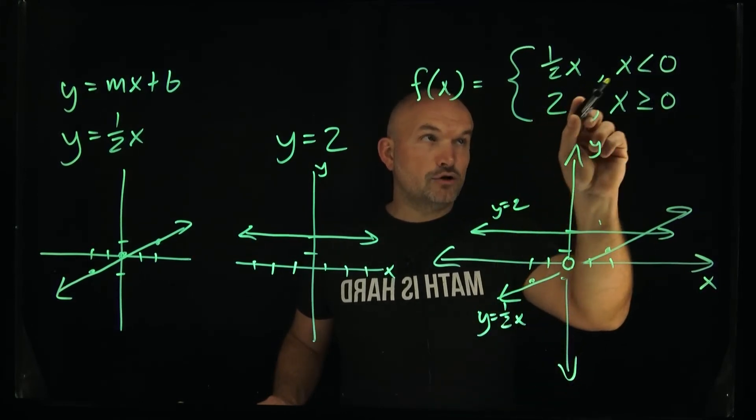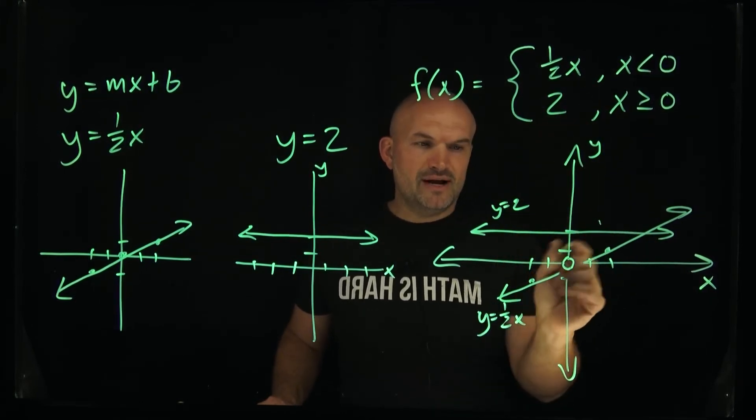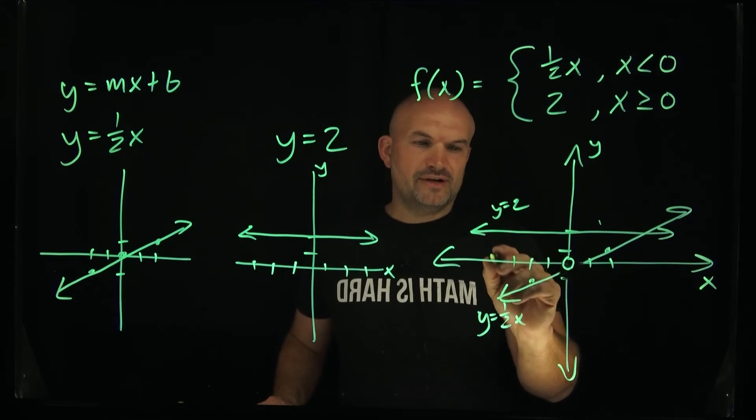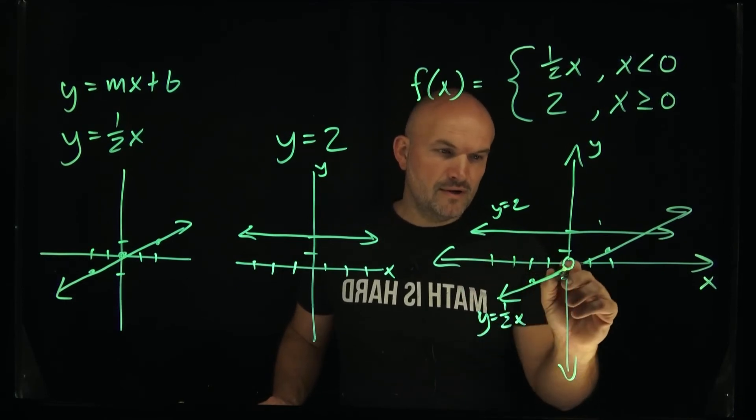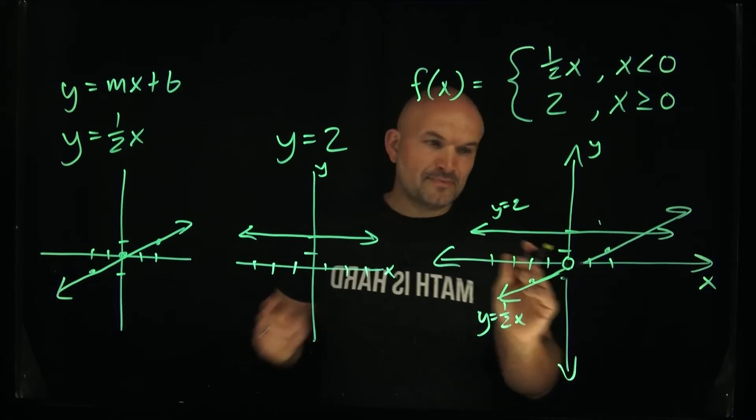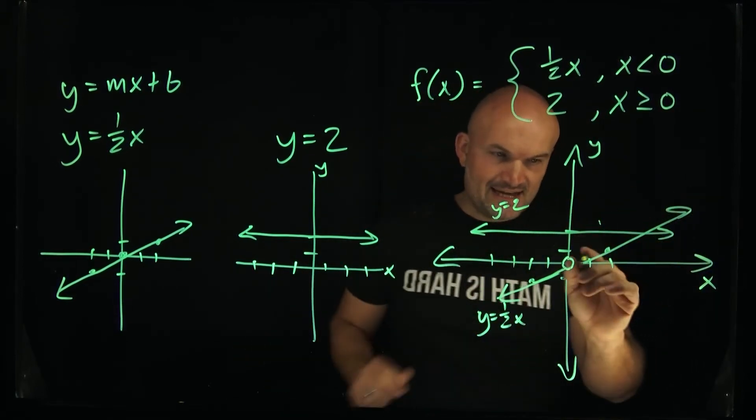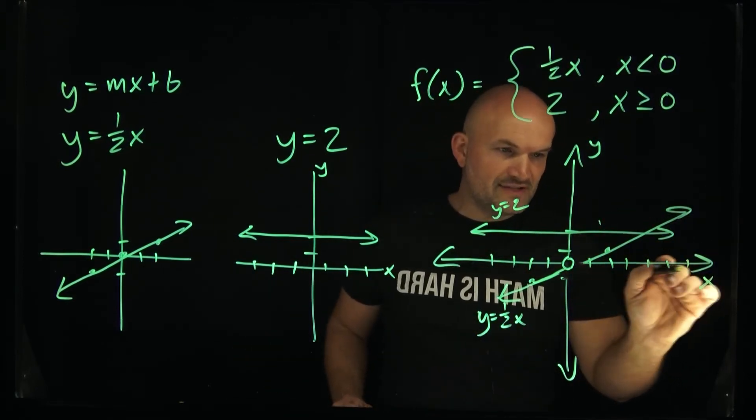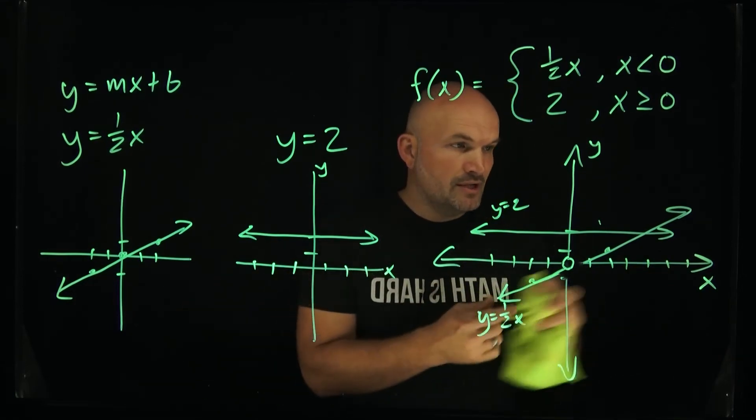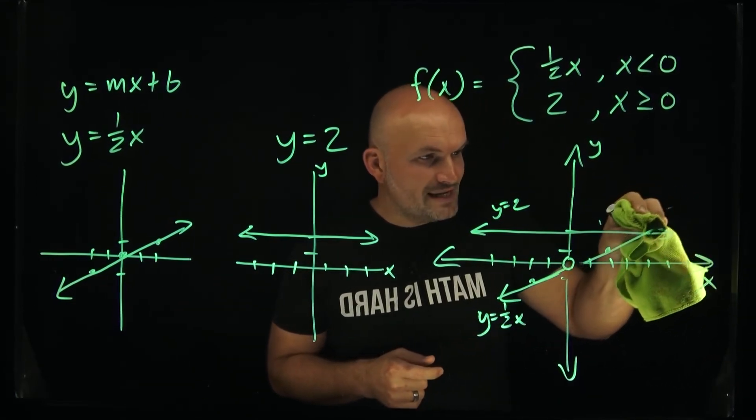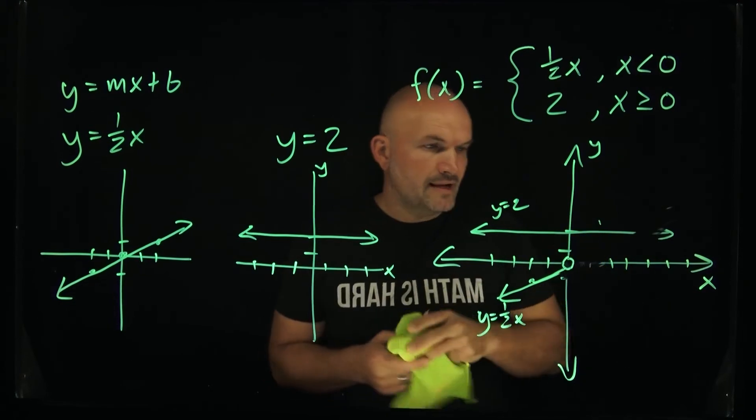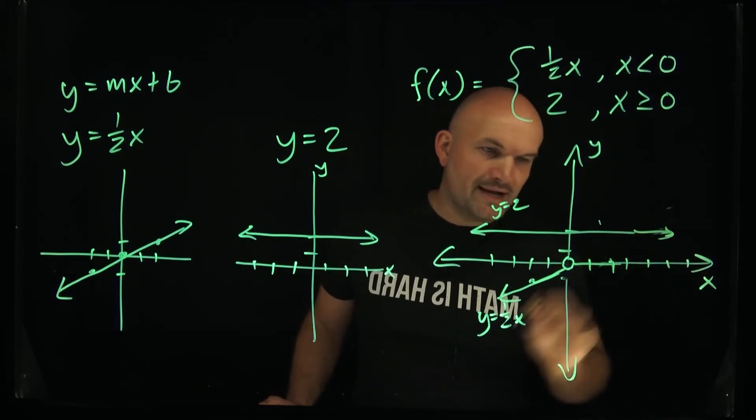So y=1/2x is only true for x values less than 0. You think about this negative 1, negative 2, negative 3, negative 4, it's true for all these values. So that function is just going to look like this. Now anything in the positive x-axis like 1, 2, 3, 4, 5, 6 those are not going to be true. So therefore we are going to erase that.